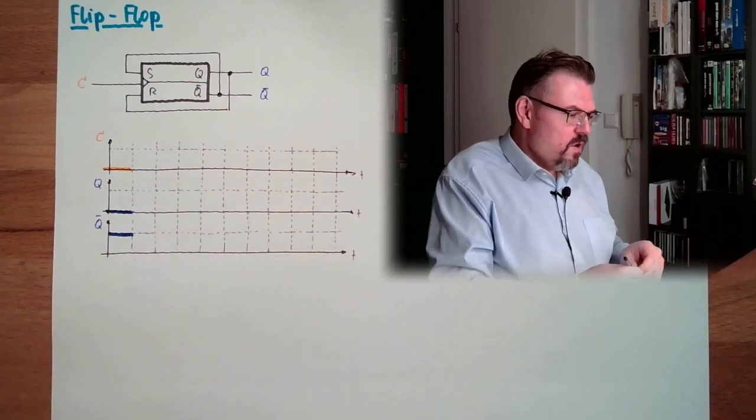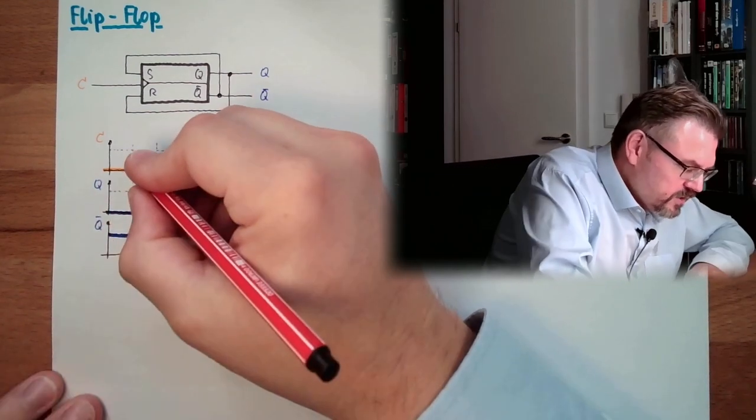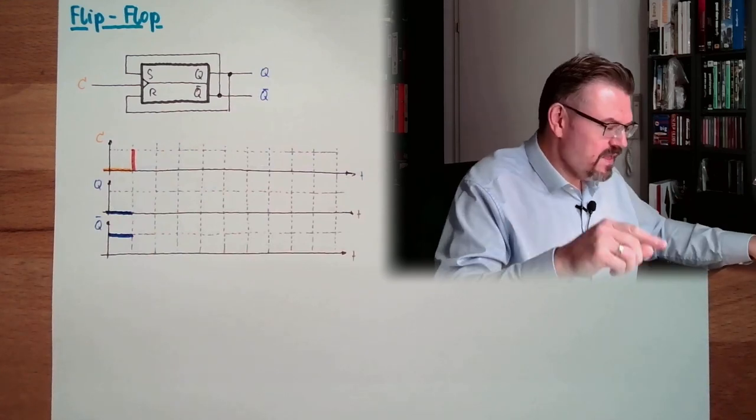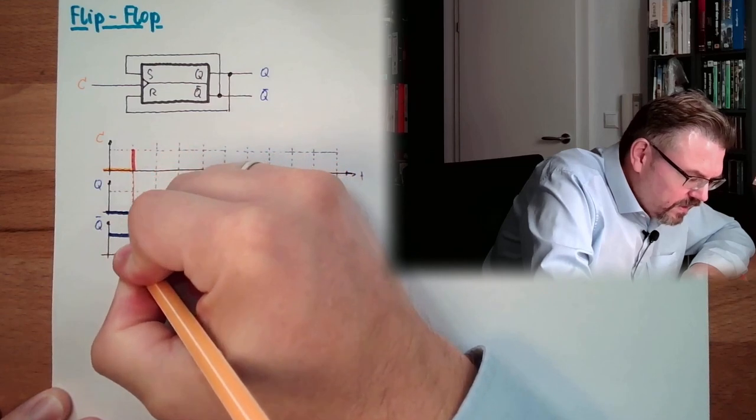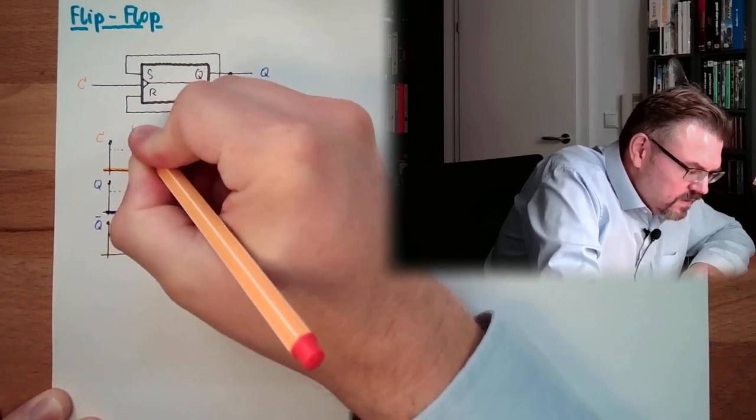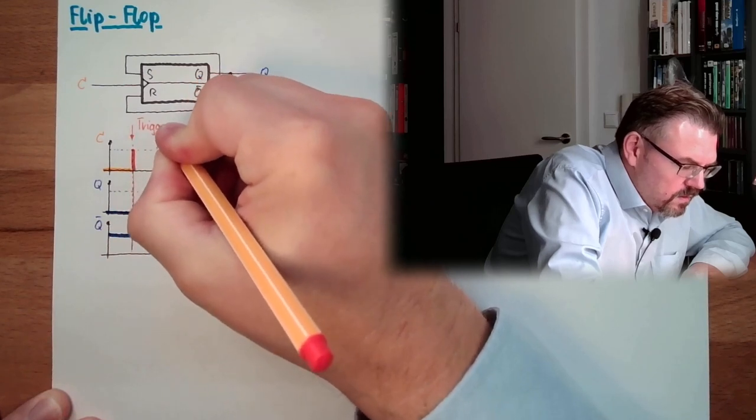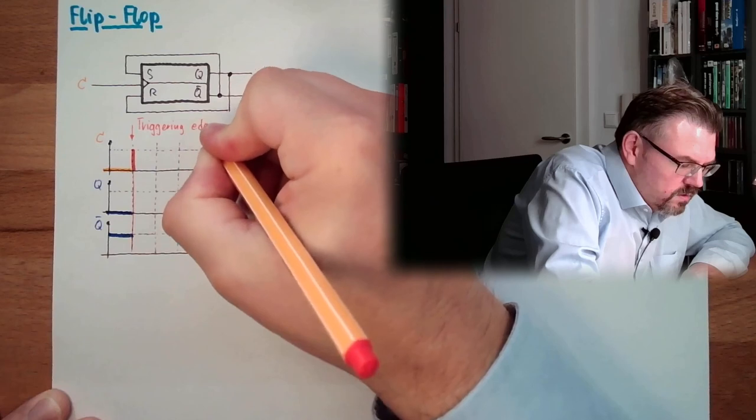And now we have a rising edge. So here is a rising edge, let's see, mark it red. A rising edge here. This is a triggering edge. So here, something is happening. So this is the triggering edge of the signal.